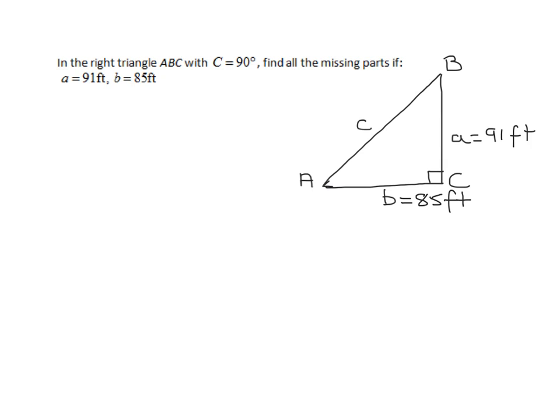So we have to find the missing side c and angle A and angle B. Well, the easiest thing to find is side c because given two sides of a right triangle, it doesn't matter which two sides, I can always find the third side using the Pythagorean theorem.